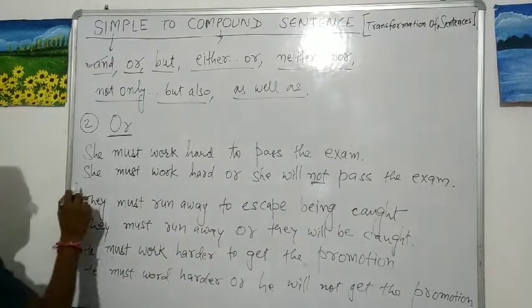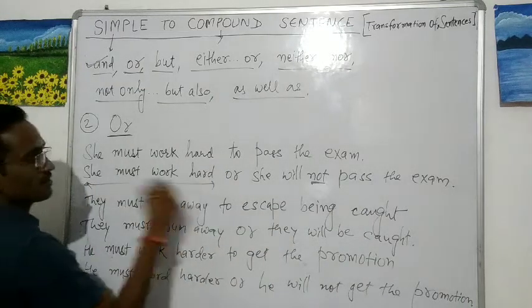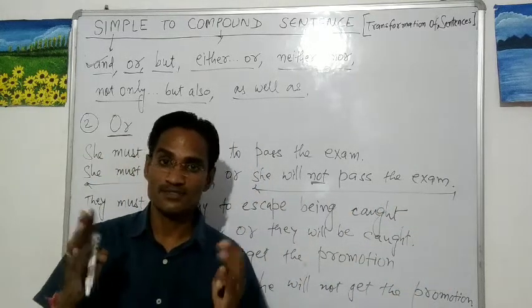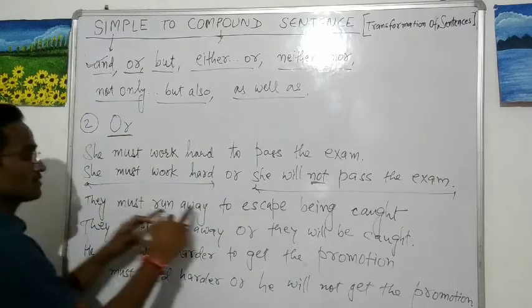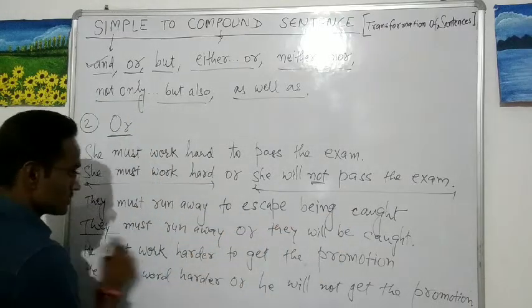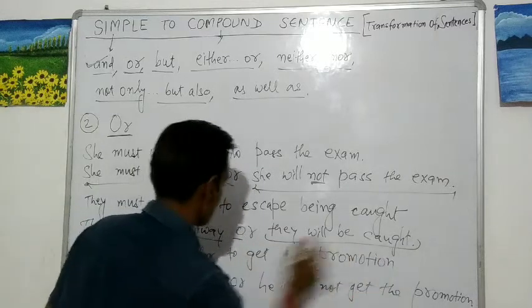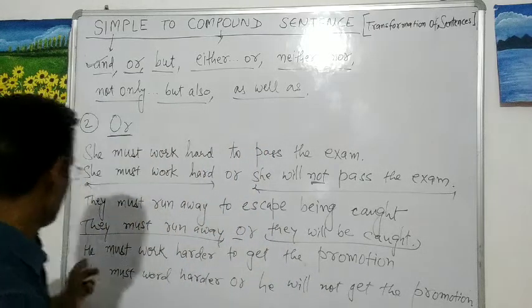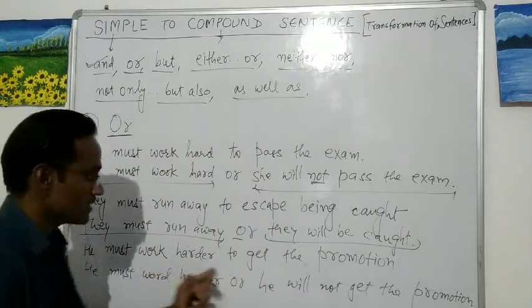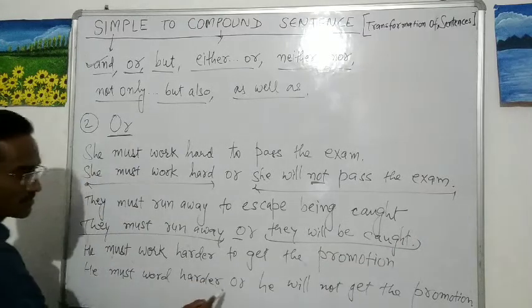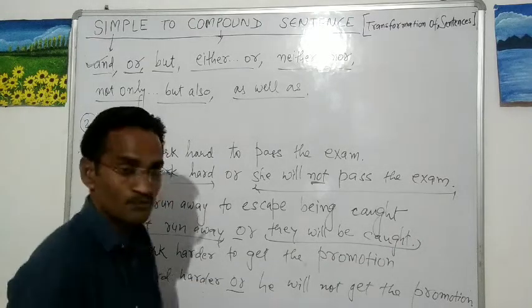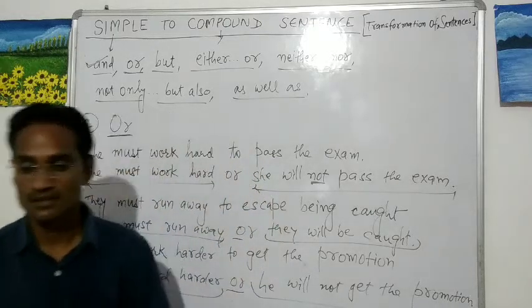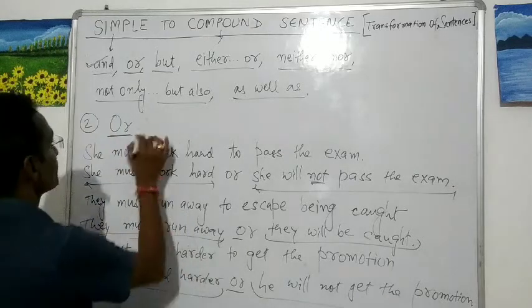Let's review. 'She must work hard' and 'she will not pass the exam' are two independent clauses. 'They must run away' and 'they will be caught' are two independent clauses. 'He must work harder' and 'he will not get the promotion' are two independent clauses. So we can use 'or' or the word 'otherwise' to join them.